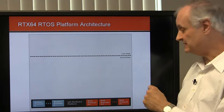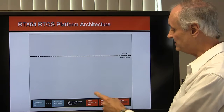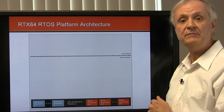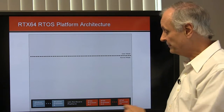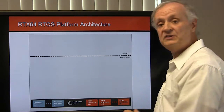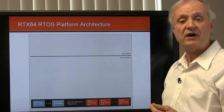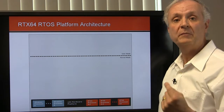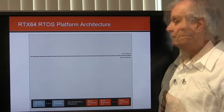RTX can range from one processor in a dual processor system all the way up to 63 processors. Windows can have multiple processors, but at least one must be assigned.